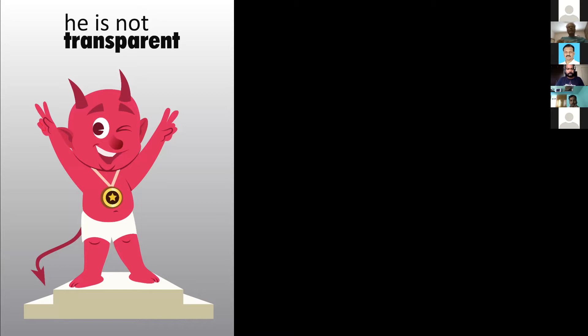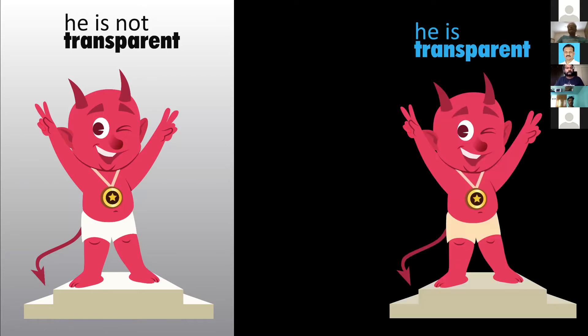Different types of pictures — one is transparent images and not transparent pictures. In this one, the tiny demon is not transparent. Look at the placement of the text. It's good; at least the text looks good and it's all readable. But look at this one — this particular image is transparent.